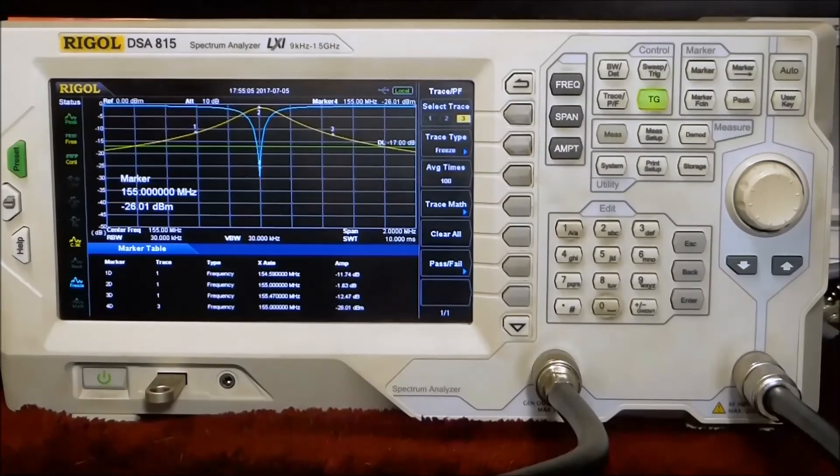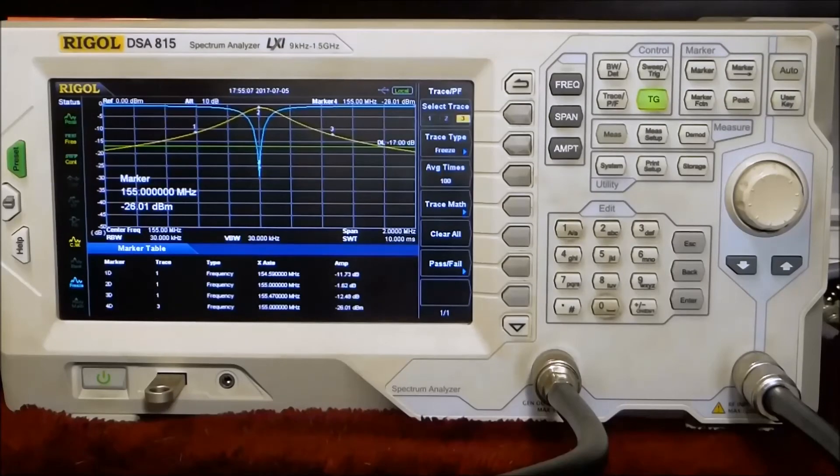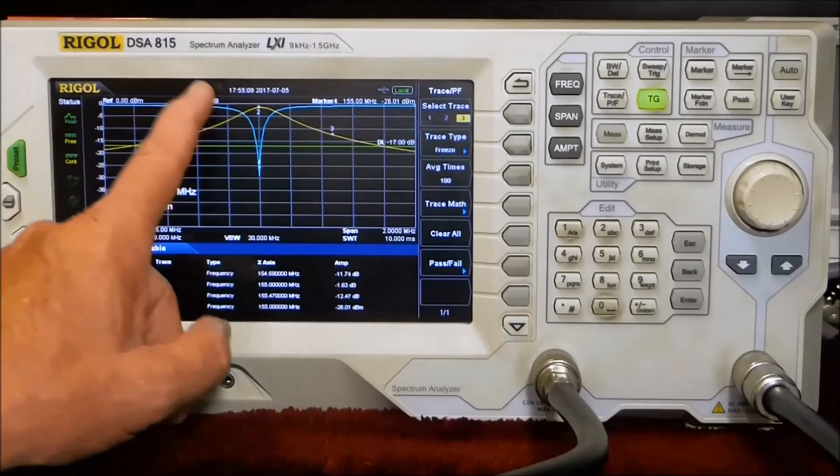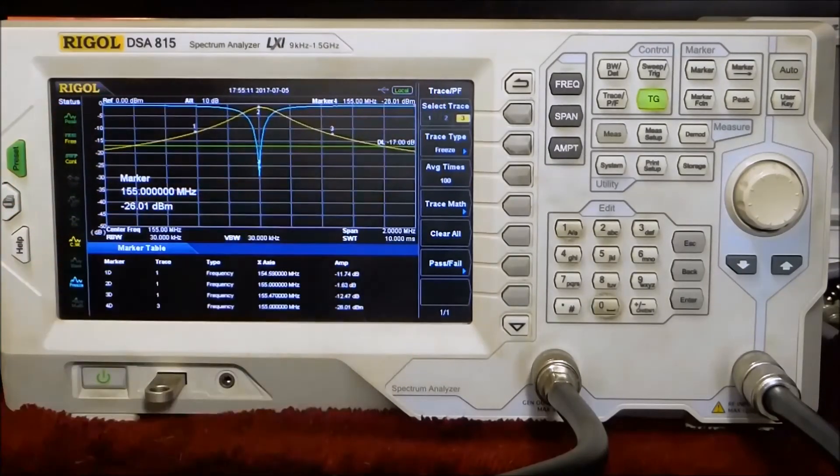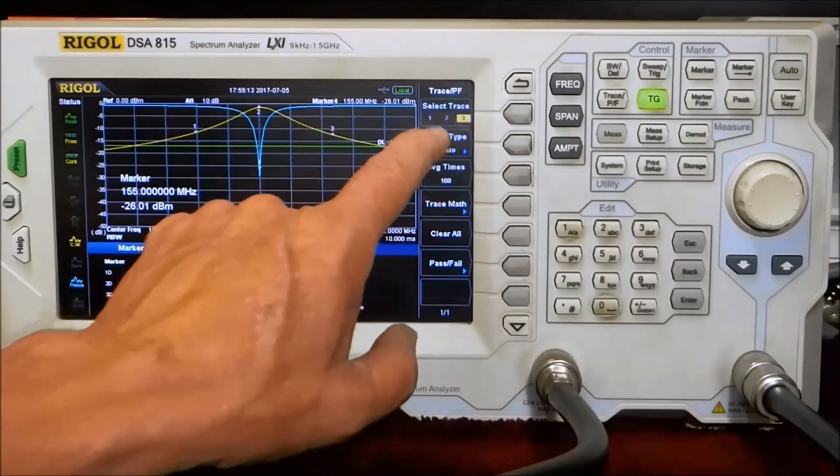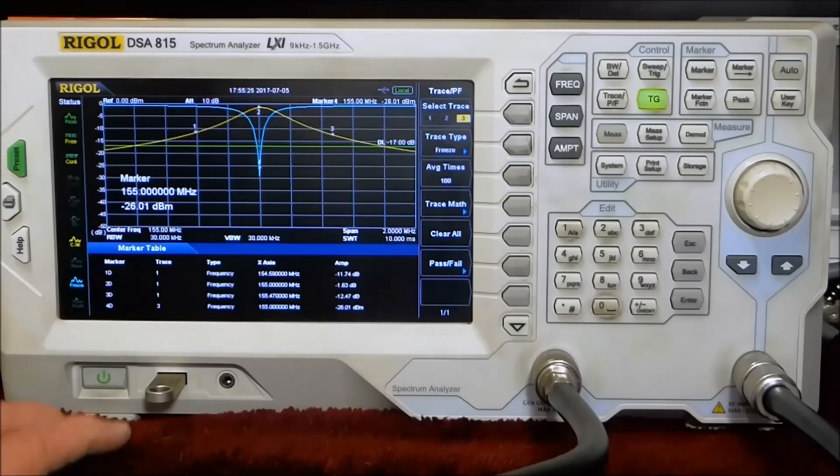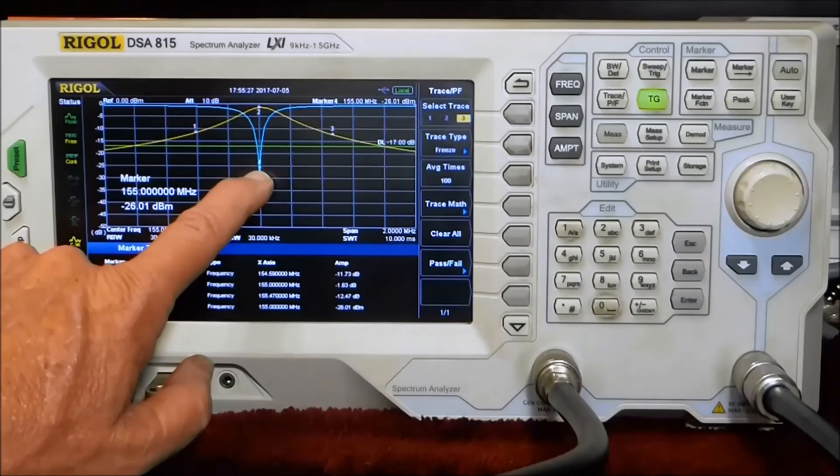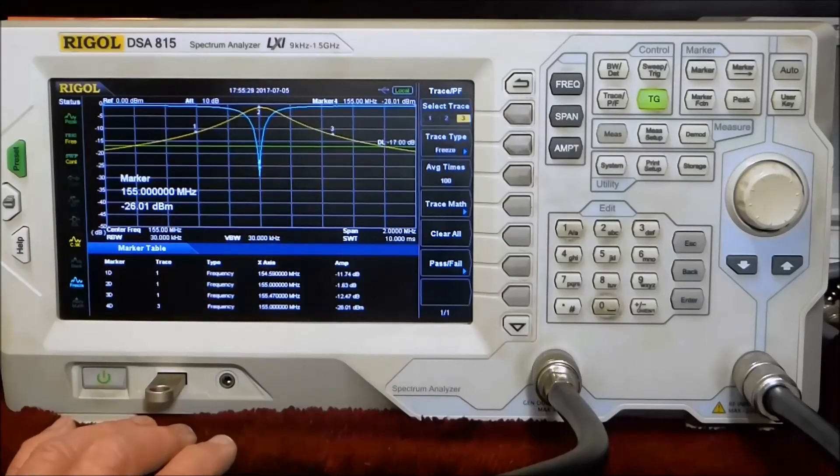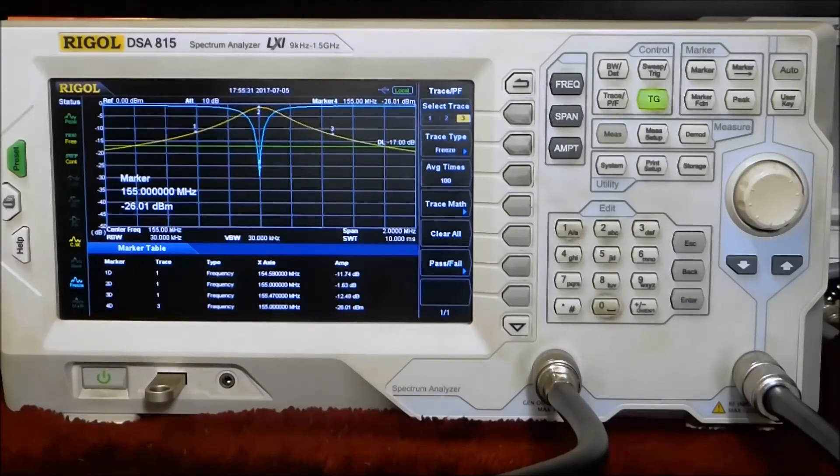Using the return loss test setup, what I've done here is added a second trace, the blue trace here, which is number three actually. I didn't use two. And what I did is equalize or shall we say normalize that and then check the return loss, which you can see with marker number four here is minus 26 dBm or dB actually.